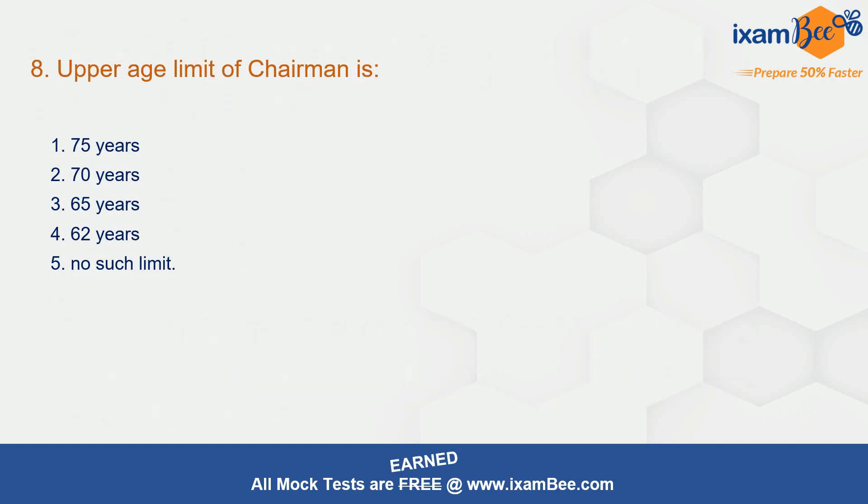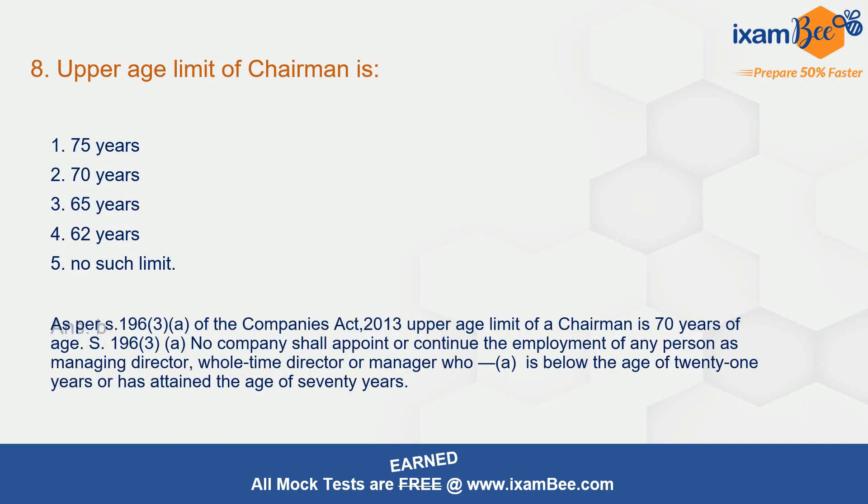Question 8: what is the upper age limit of a chairman? The correct answer is B — 70 years, as per section 196 of the Companies Act.